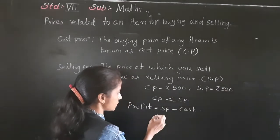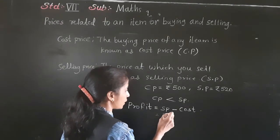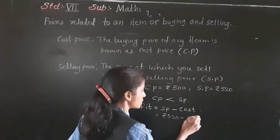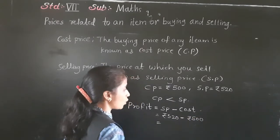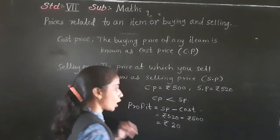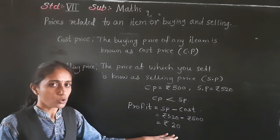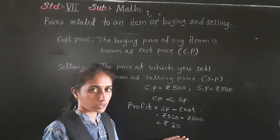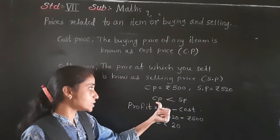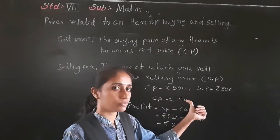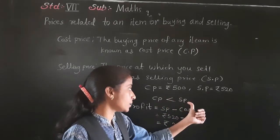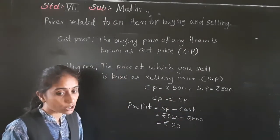What is the selling price in this transaction? Rupees 520. And what is the cost price? Rupees 500. So how much profit did I get? Rupees 20. When cost price is smaller than selling price, we get profit.